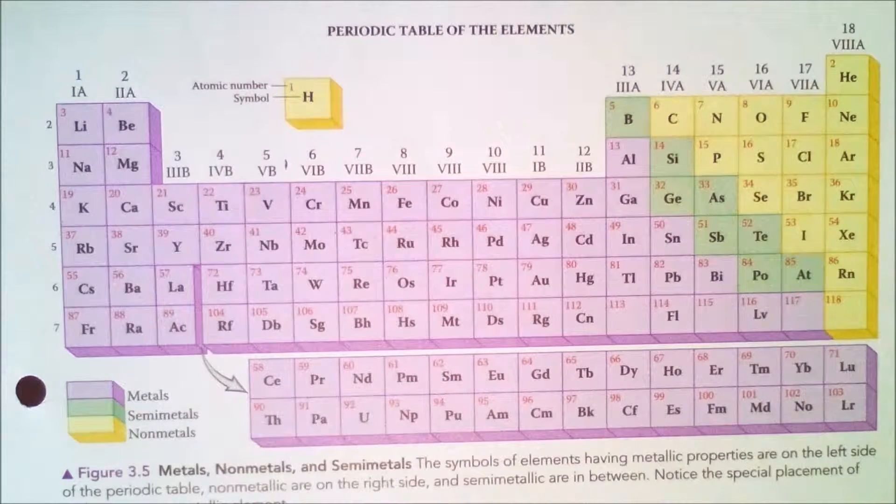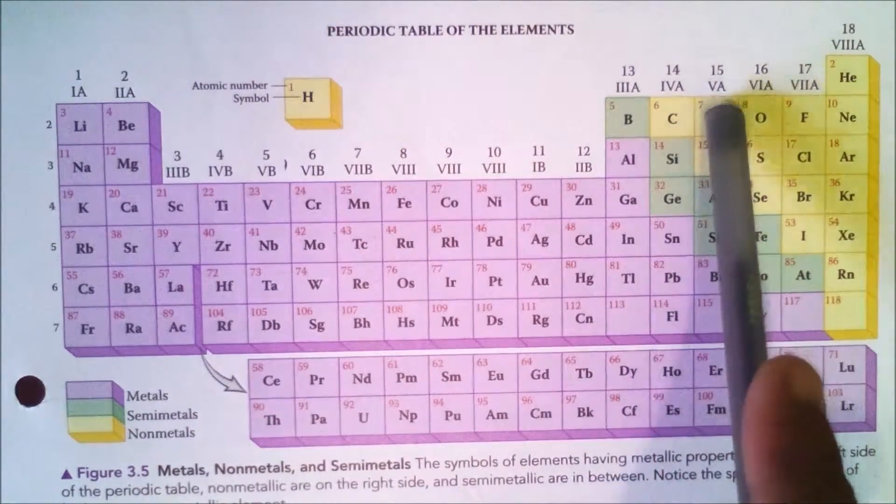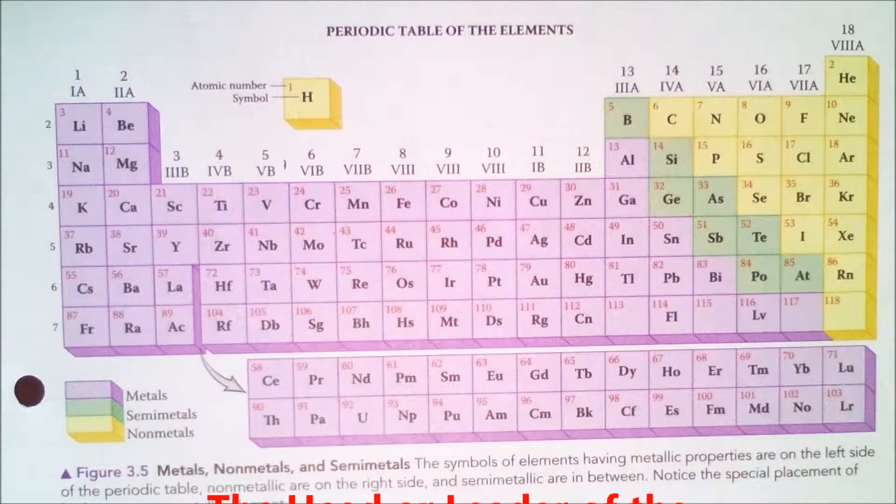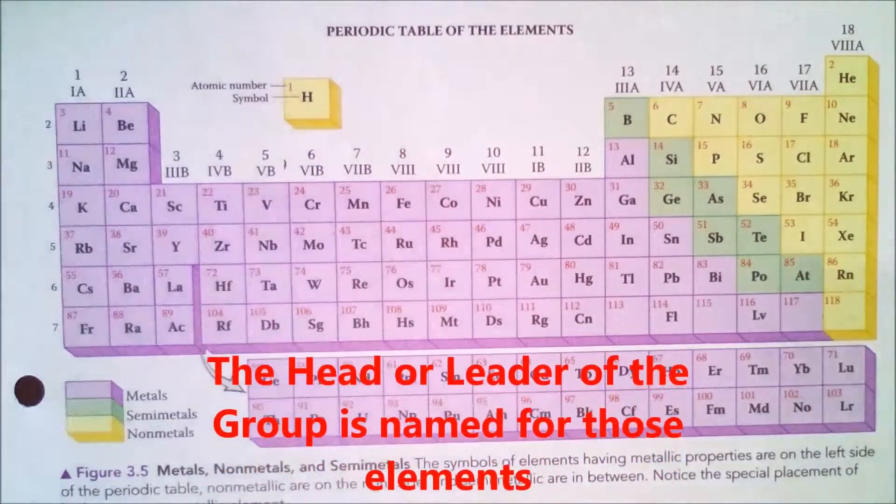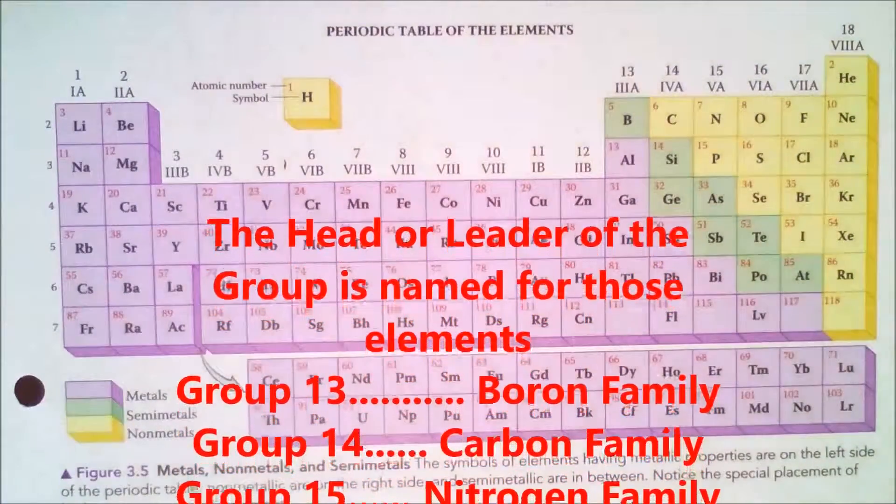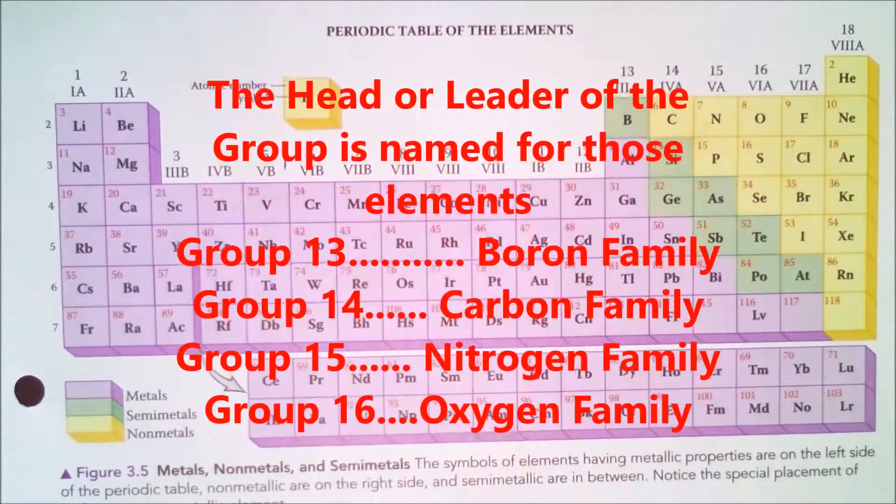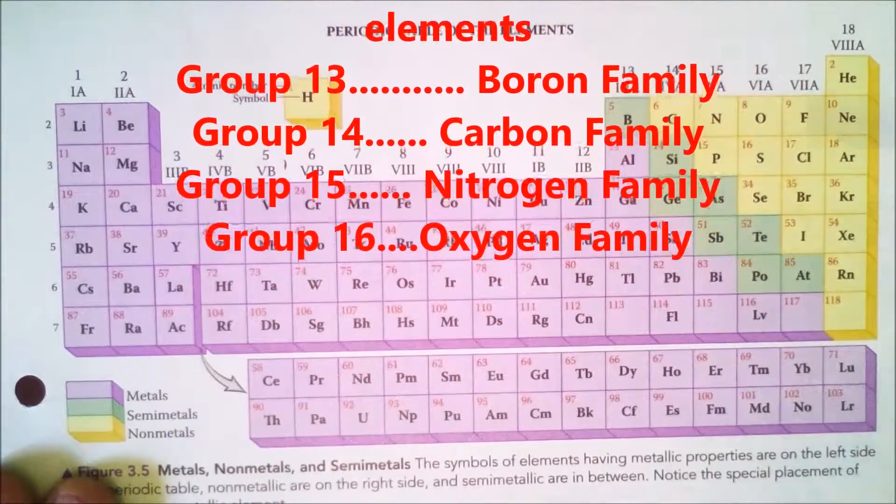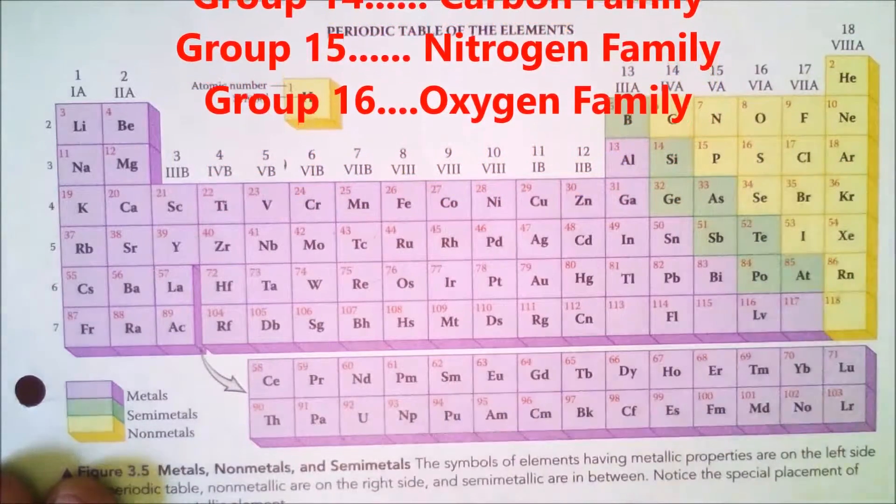And the next group, groups 13, 14, 15, 16, those groups are named according to the head leader in that particular category. For instance, the group of elements here in group 13 are called the boron family or the boron group. Some books will refer to them as families also. Group 14 here is called the carbon family. Group 15 is called the nitrogen family. And group 16 is the oxygen family.